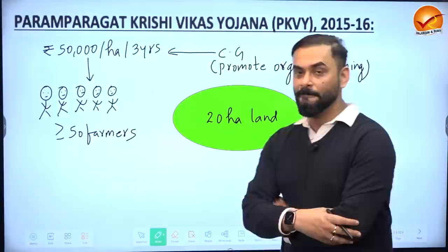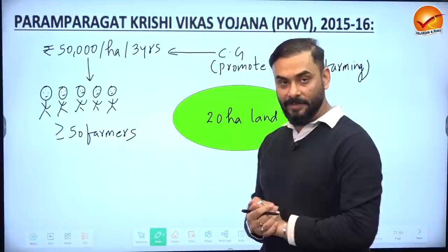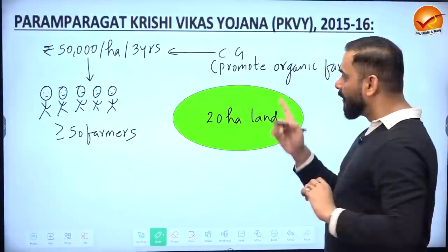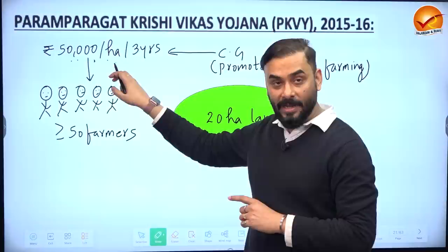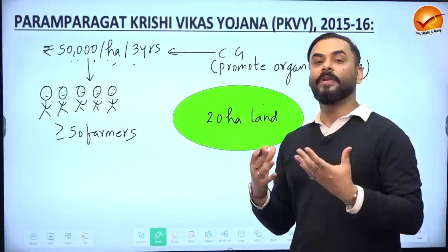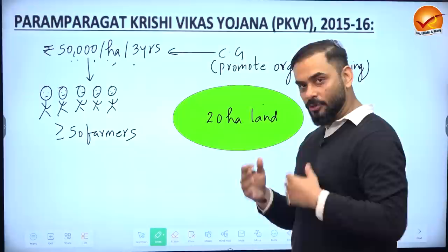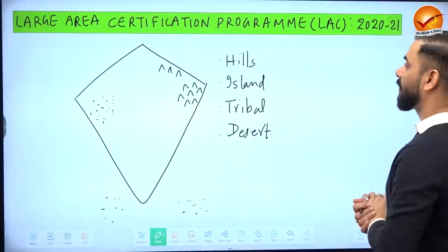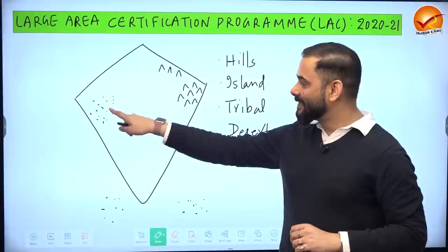Paramparagat Krishi Vikas Yojana (PKVY): under this scheme, 50 or more farmers must come together and arrange a minimum of 20 hectares of agricultural land. The government then provides 50,000 rupees per hectare for three years to promote organic farming using eco-friendly practices with no chemicals.